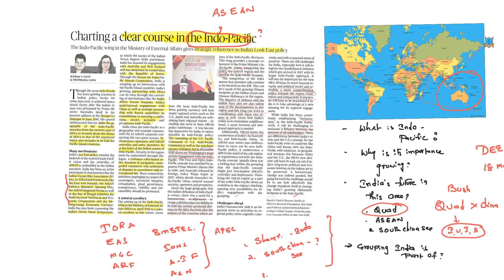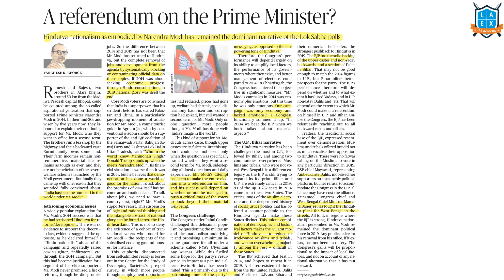The Indo-Pacific region is gaining significance and various strategic documents of different countries reflect this. India also has to go forward with its policy, and having the proper bureaucratic and administrative apparatus is necessary. Identifying strategic trade relations with member countries is important, and the centrality of ASEAN along with economic and strategic relations must guide India's Indo-Pacific policy.